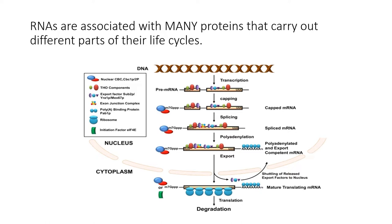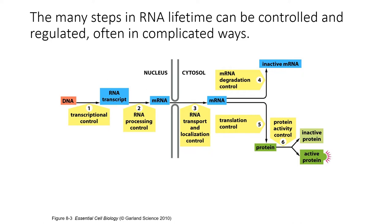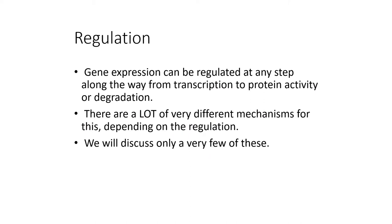We don't often think about it, but there are many steps in the life cycle of an RNA that can be controlled and regulated in very complicated ways. These include transcriptional control — whether a gene is on or off — RNA processing, nuclear export, RNA degradation, and translation. Gene expression can be regulated at any step, and there are many different mechanisms for post-transcriptional regulation.